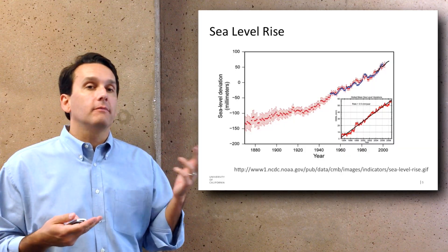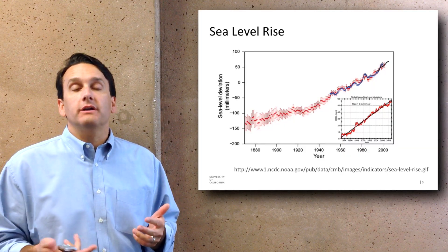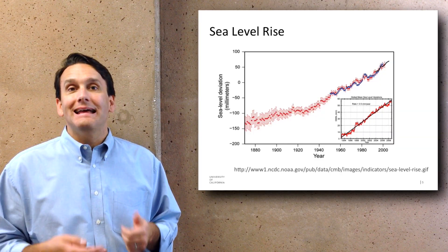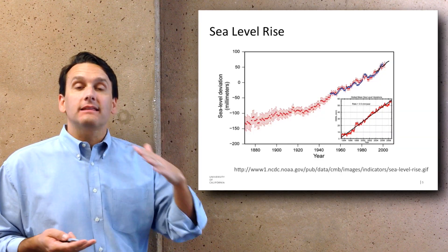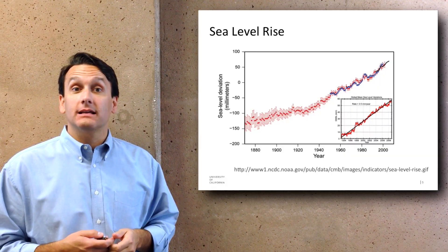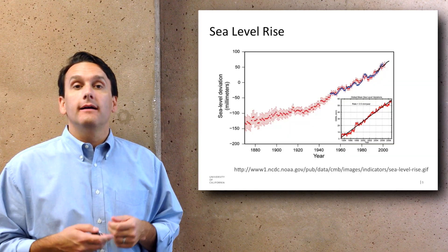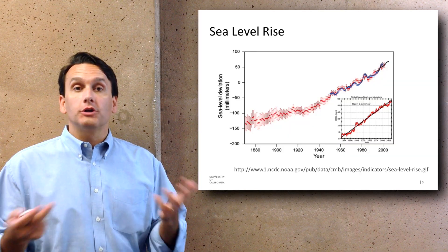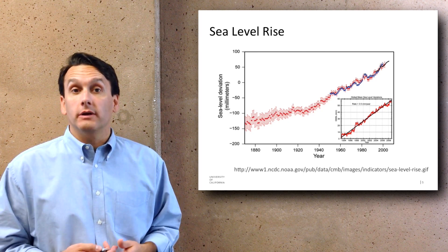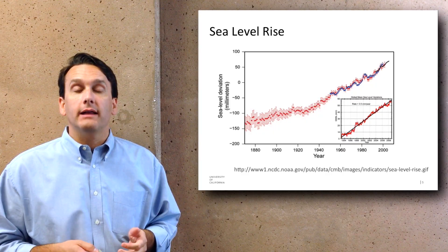Sea level rise is one example. Here we see a graph from 1880 to the year 2000, and this only demonstrates a few centimeters worth of sea level change. And yet the fact that it is this inexorable rise and that it's forecast to continue leads to some pretty significant challenges where large portions of human habitation will be underwater at a certain point. This appears to be something that's an ongoing trend.